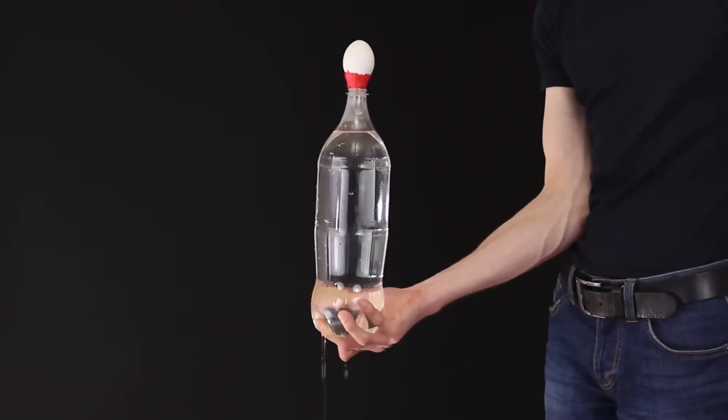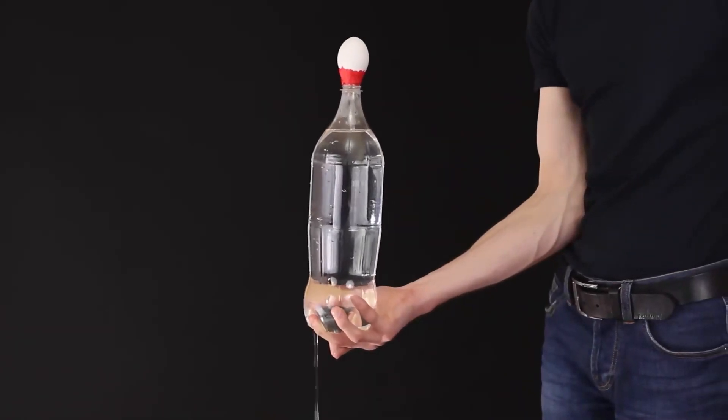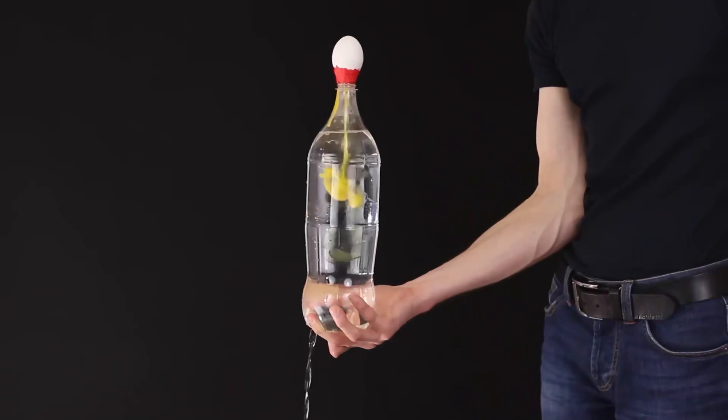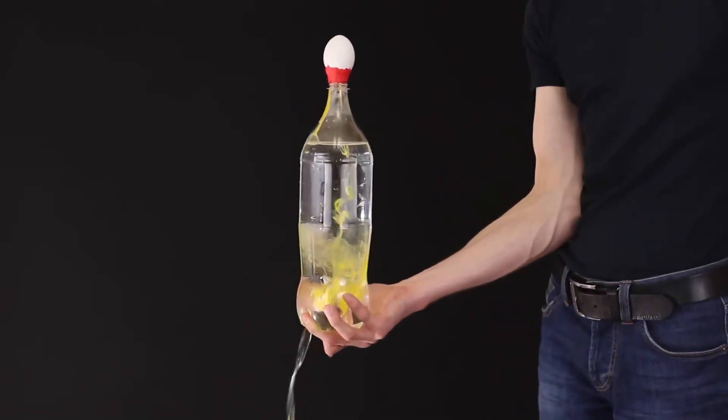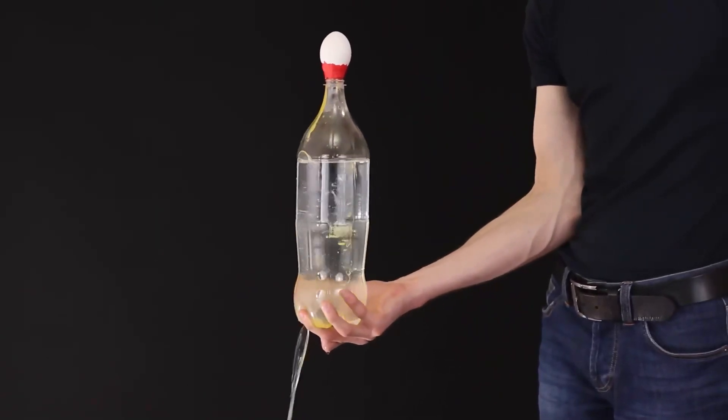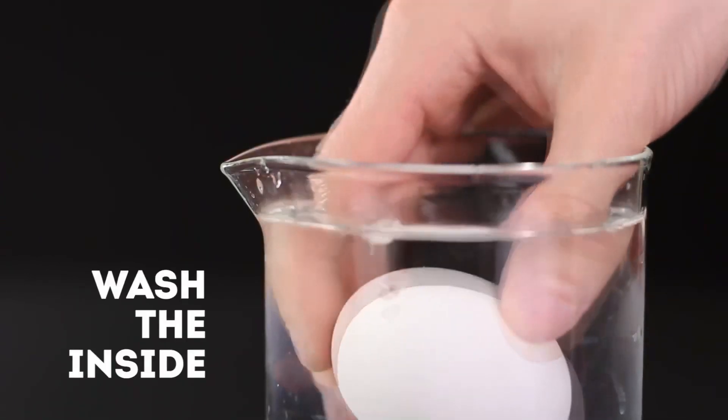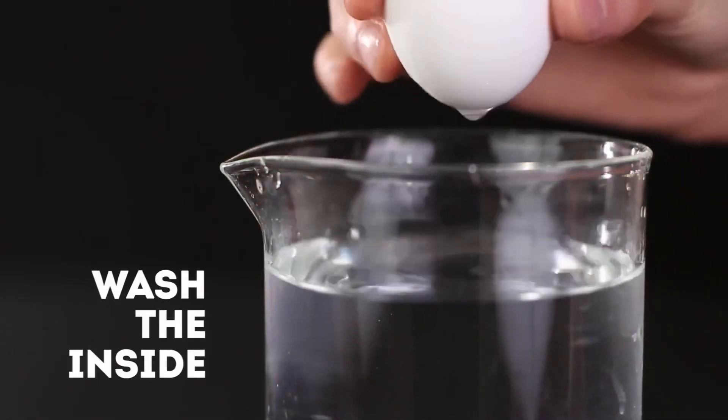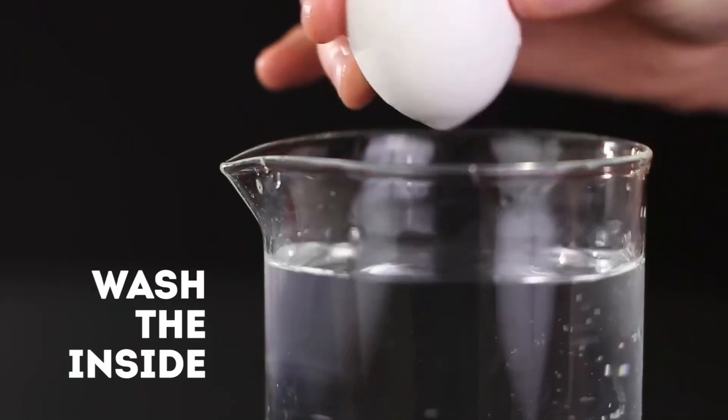We fix the prepared egg on the neck of the bottom with clay. And now you remove the finger from the bottom of the bottle and watch how the pressure will put out the entire contents of the egg, like this. Rinse the shell in water and to remove the remaining moisture, blow into one of the holes.